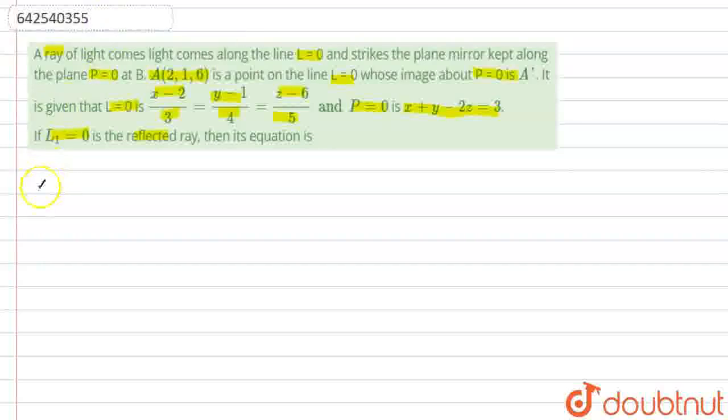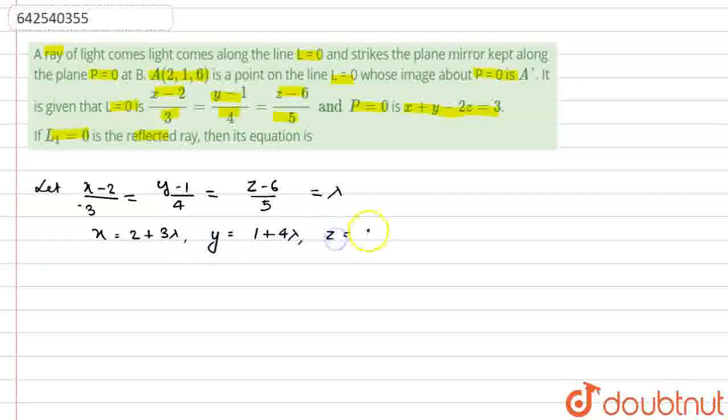Let x minus 2 by 3 equals y minus 1 by 4 equals z minus 6 by 5 equals lambda. From here, x equals 2 plus 3 lambda, y equals 1 plus 4 lambda, and z equals 6 plus 5 lambda, lies on plane.